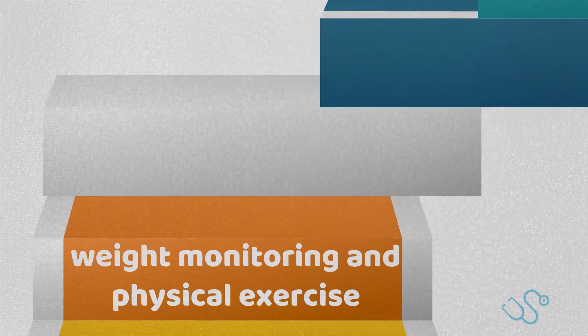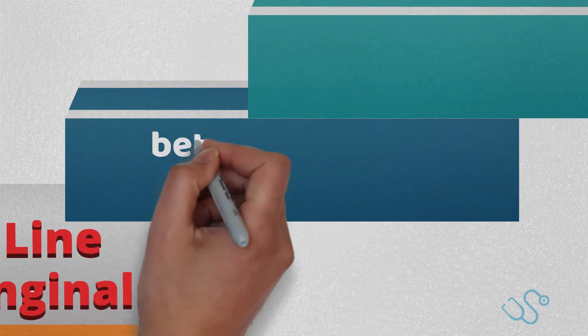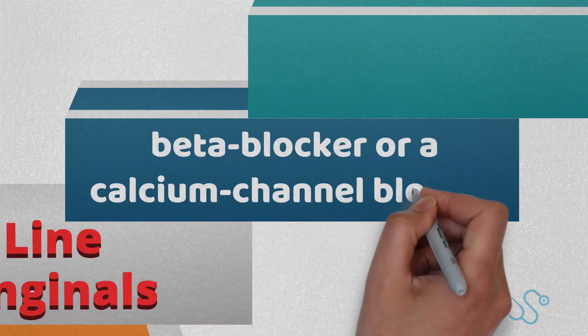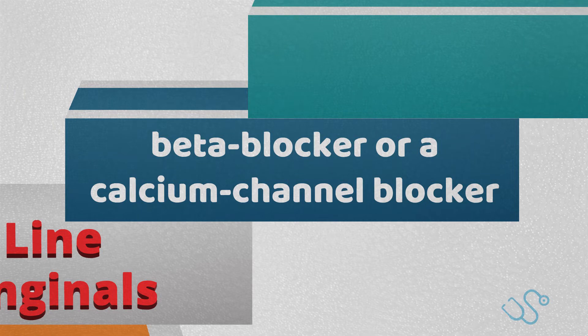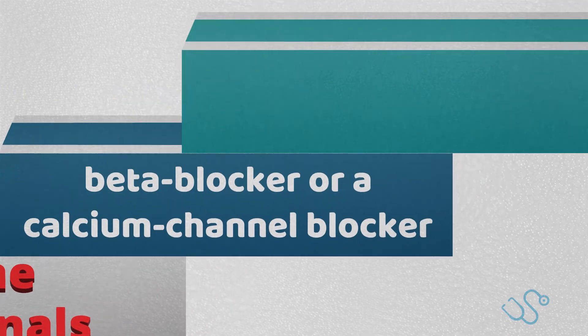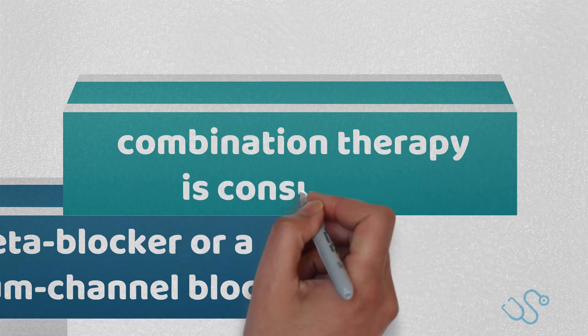In terms of subsequent first-line anti-anginals, either a beta blocker or a calcium channel blocker is used as regular treatment to reduce angina symptoms. If a patient is already on one of those, then combination therapy is considered.